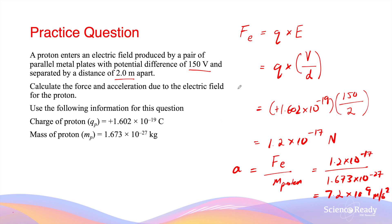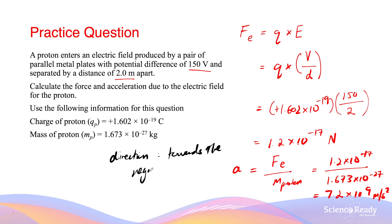It is also worth noting that both the force and acceleration are vector quantities, so we need to indicate their directions. As discussed earlier, the direction of the force and acceleration depends on whether the charge is positive or negative. Since the proton is positive, both the force and acceleration will be directed towards the metal plate that is negatively charged.